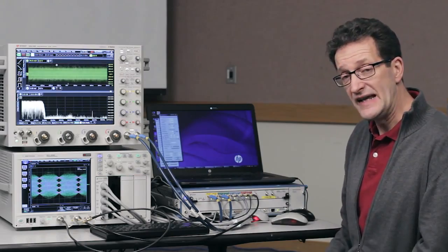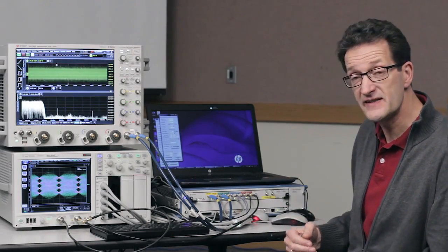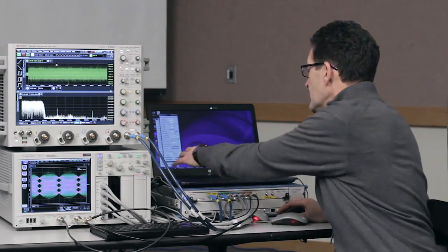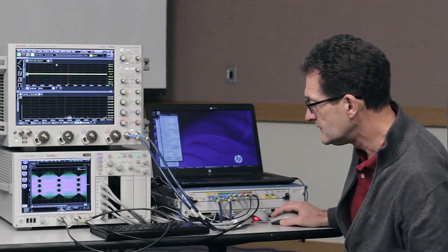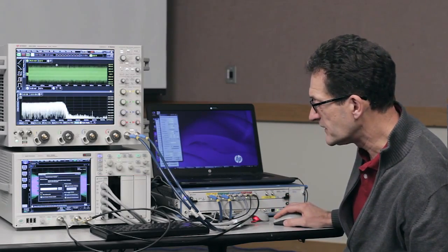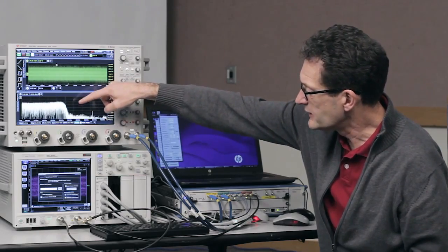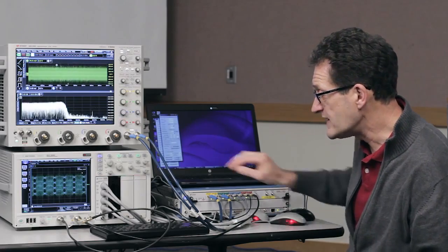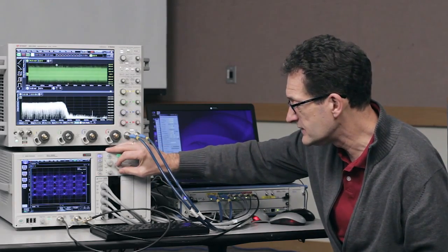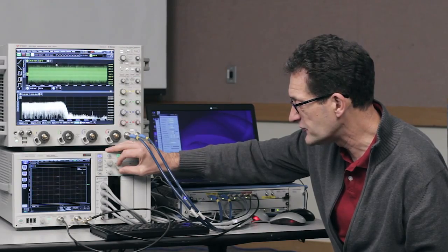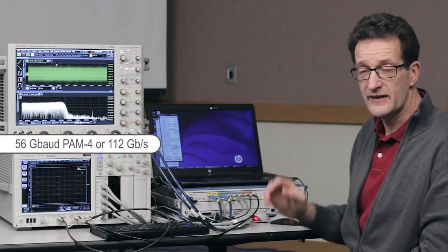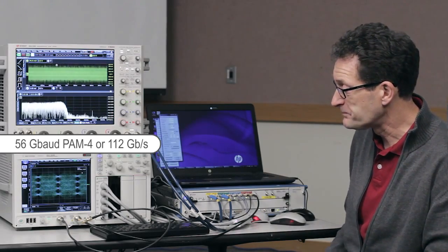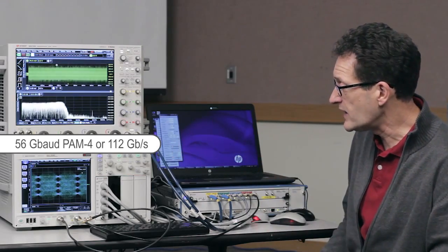Let's do the jump to the next speed grade and bring this up to 56 gigabaud PAM4. I'll bump up the baud rate and make this a 56 gigabaud. And I have to reset my time base here. You notice the spectral content increases again up to 28 gig, but now I have twice the data content. I have to stretch the time base here on the scope so that we can see it. So now it's running at 56 gigabaud PAM4 or 112 gigabits per second. The signal looks not quite the way you want it to be.